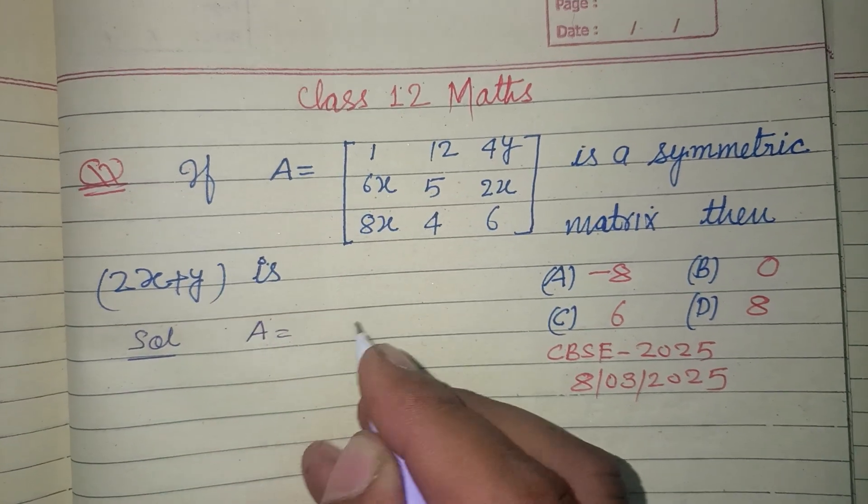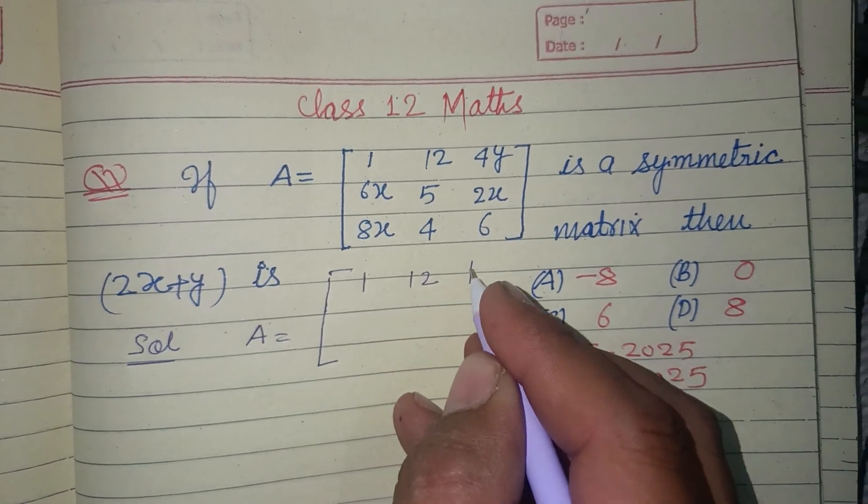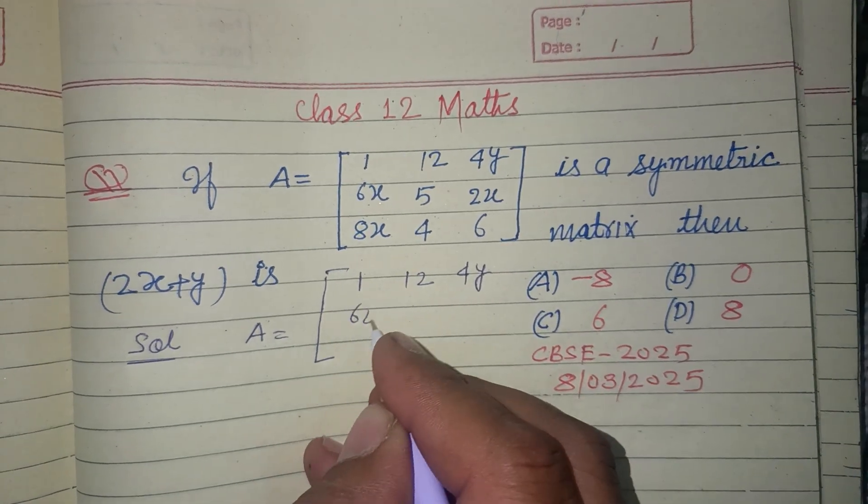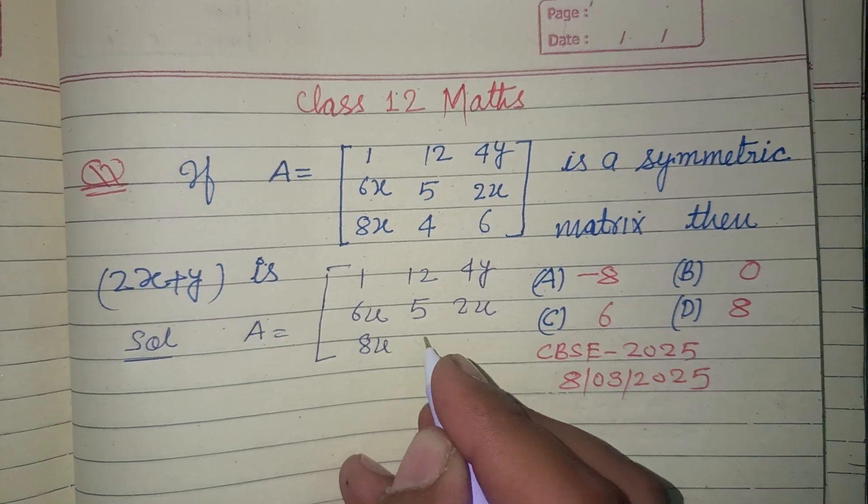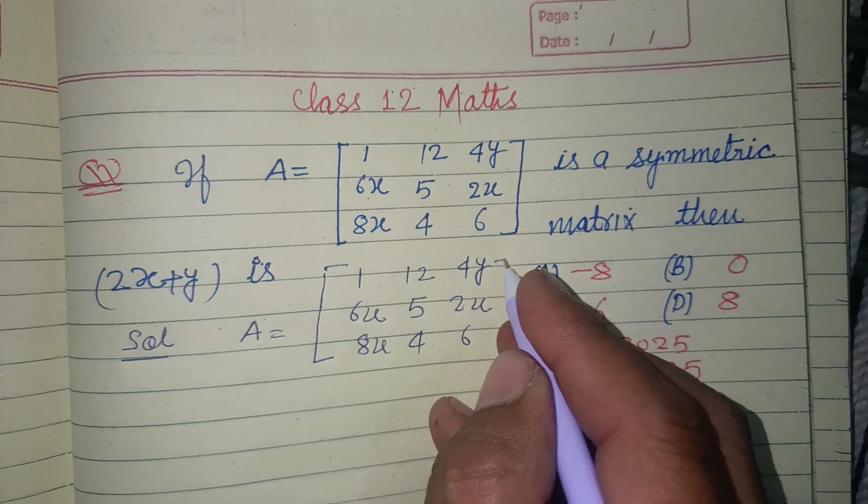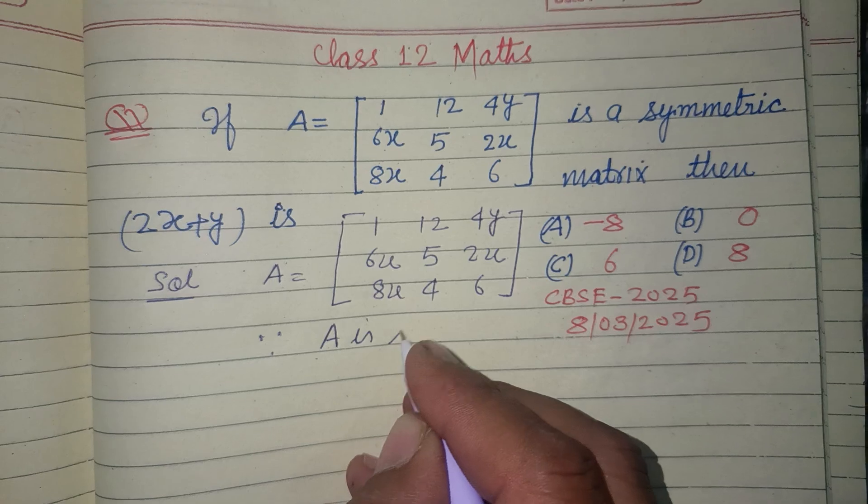A is the matrix [1, 12, 4y; 6x, 5, 2x; 8x, 4, 6] with its elements. Since A is symmetric matrix